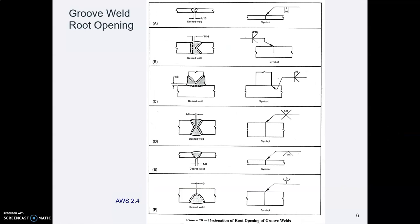You have a short quiz about weld symbols and one of the questions is about root opening. So I just want to point out that root opening is a gap between the two plates. In the example at the top, these two plates have a space between them of a sixteenth of an inch.